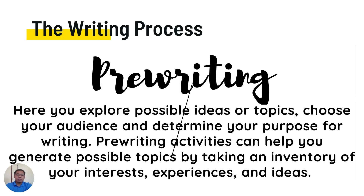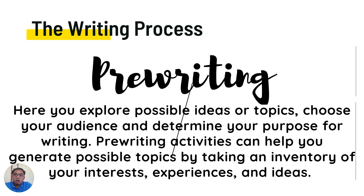Now let's talk about the writing process. Here you explore possible ideas or topics, choose your audience, and determine your purpose for writing. Pre-writing activities can help you generate possible topics by taking an inventory of your interests and experiences. A process-oriented approach views writing as a creative process — it focuses not so much on the product, but more on the processes or steps the writer has to go through. According to White and Amp, 1991, writers have to start with an overall plan by thinking about what they want to say and the audience they are writing for.